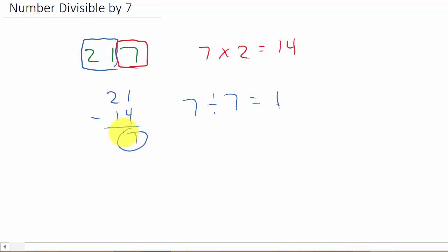then that also means that 7 will divide into this number evenly. So if you get 0 or a number that 7 divides into evenly, then 7 will divide into the entire number evenly.